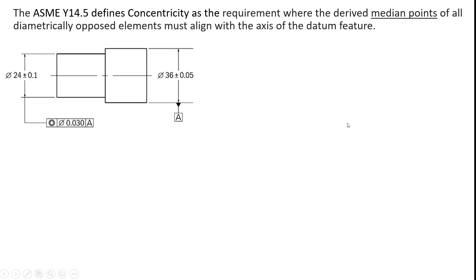I've thrown in this little drawing example here. You can see that datum feature A is the 36 millimeter diameter with tolerance of plus or minus 50 microns. And then on the smaller diameter over here on the shoulder we have 24 millimeters plus or minus 100 microns.